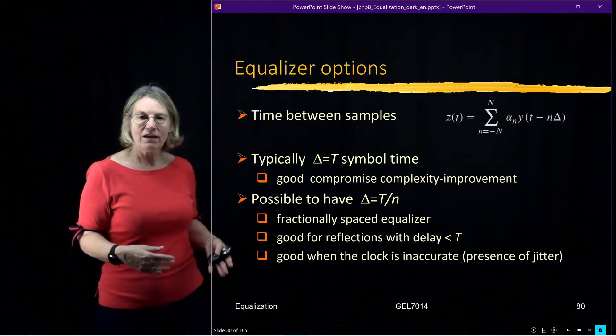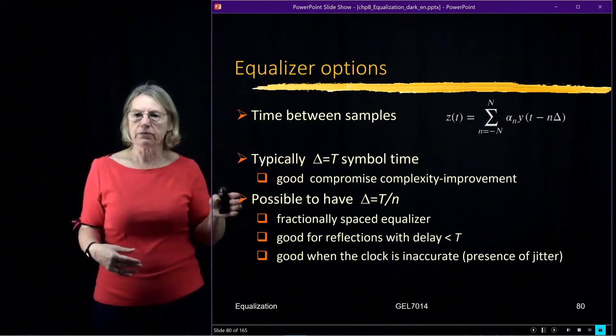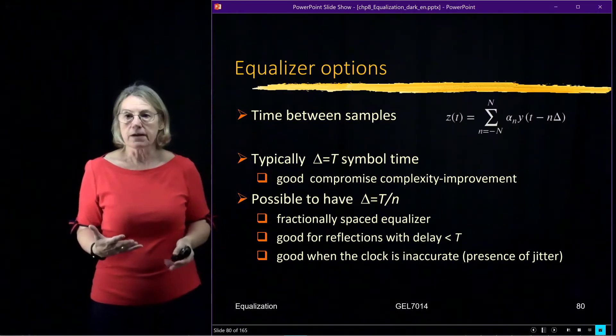You'll just get as if you had a good clock and regular symbol sampling or oversampling with a bad clock. They'll give you pretty much the same performance.